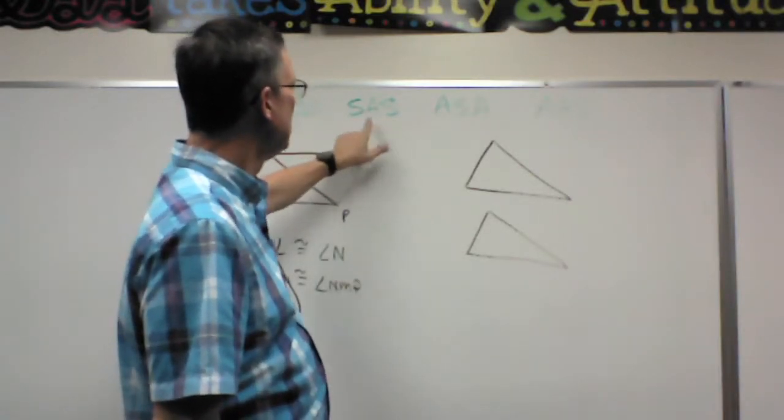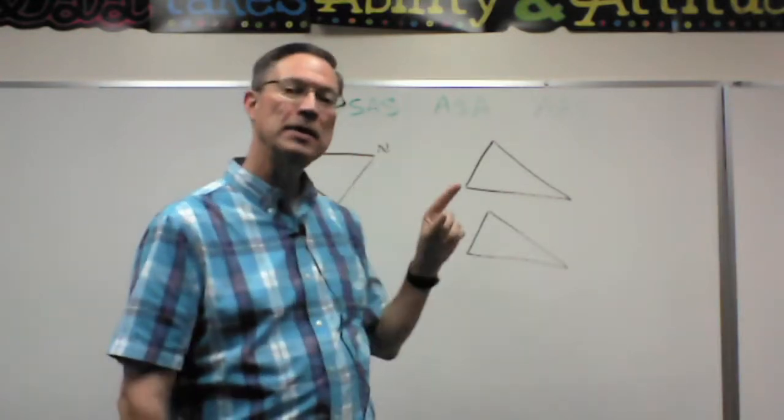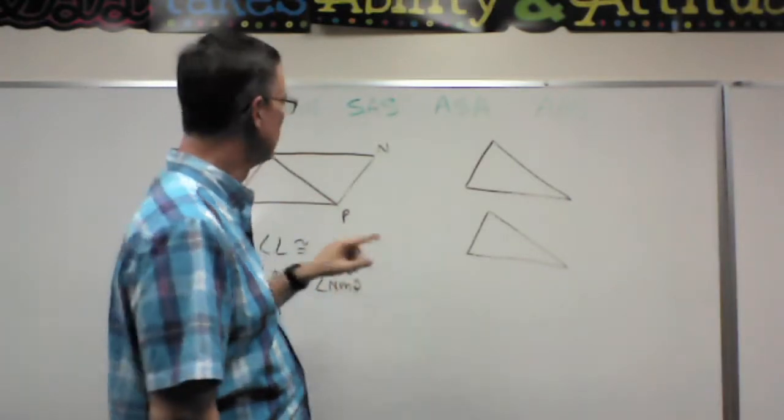Side angle side means one side, actually two sides are congruent, and this A here means that the angle between those two sides is congruent.